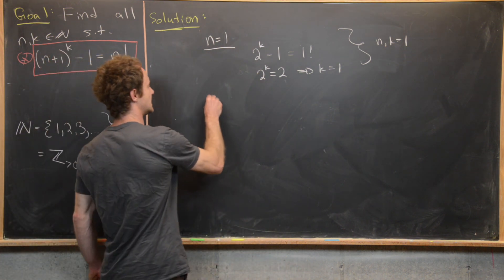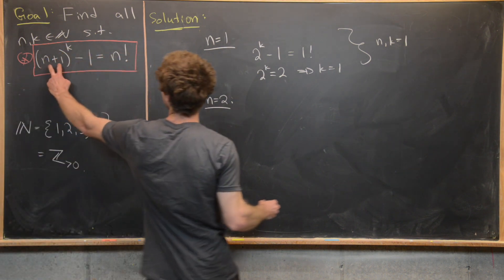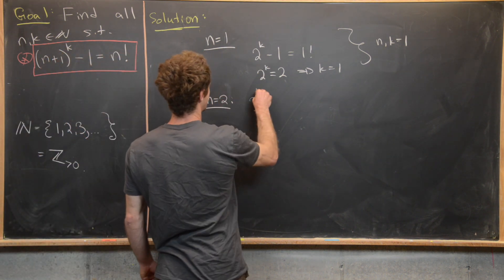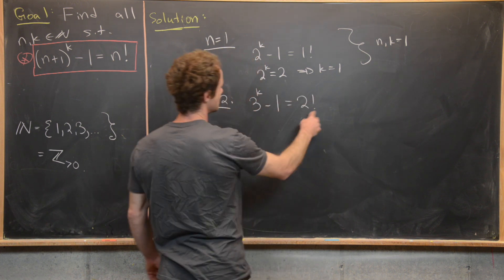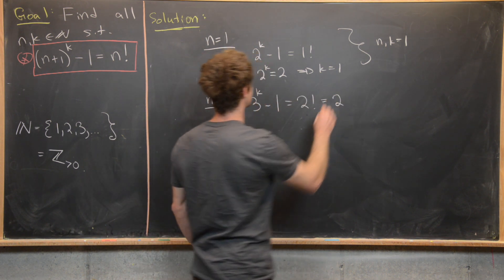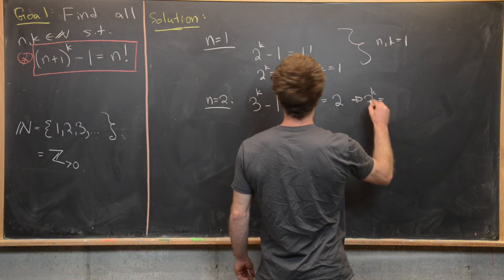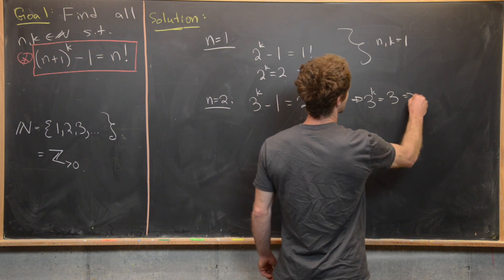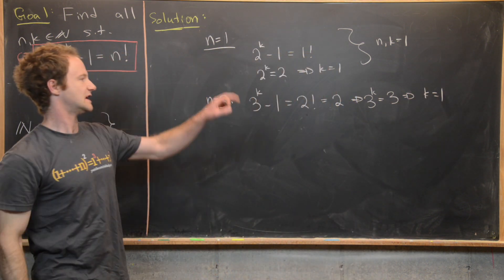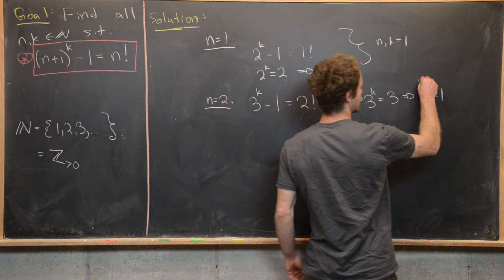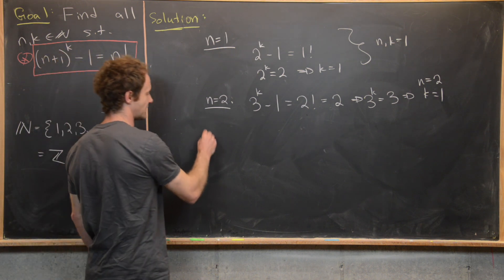When n=2, the equation becomes 3^k - 1 = 2!. Since 2! = 2, we need 3^k = 3, which means k=1. So (n, k) = (2, 1) is another solution.